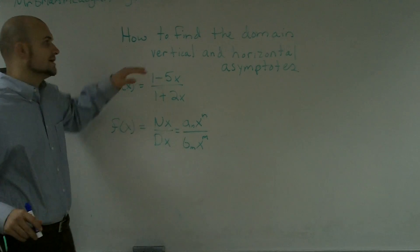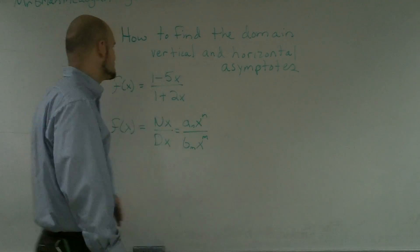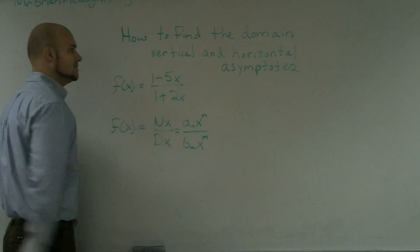What I'd like to do is show you guys how to find the domain and the vertical and horizontal asymptotes when given a rational function.